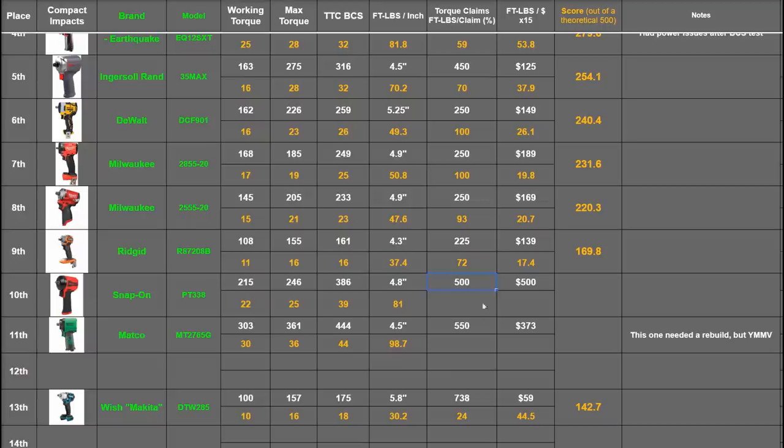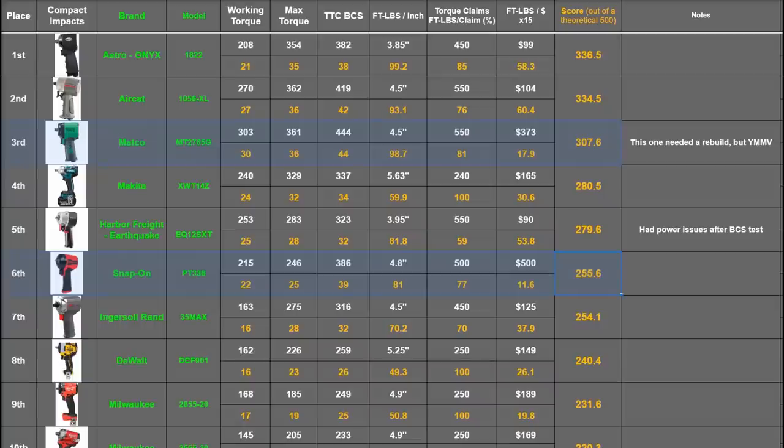The Snap-on advertises 500 and the Matco 550 for max or tightening torque - that's 77% and 81% of their claims today. Price: neither of them are going to be enjoying this. $500 and $373 - that's 11.6 and 17.9 points. That totals 255.6 and 307.6, putting them into third and sixth, mainly due to price reasons for both.